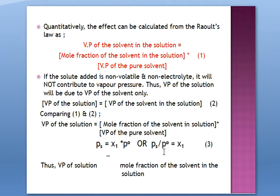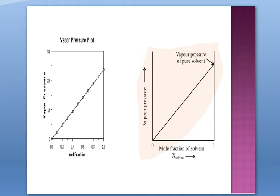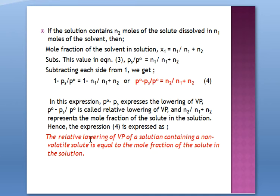The vapor pressure of the solution in which a non-volatile solute is dissolved is directly proportional to the mole fraction of the solvent in the solution. If we plot vapor pressure versus mole fraction of the solvent, we get a straight line. This point on the graph shows the vapor pressure of the pure solvent. This is how we arrive at the equation of Raoult's Law for non-volatile solutes.